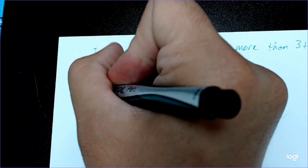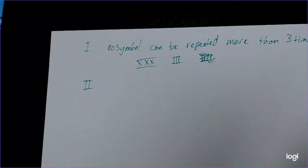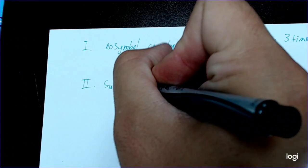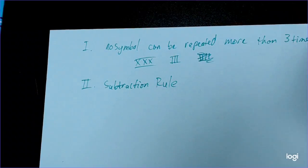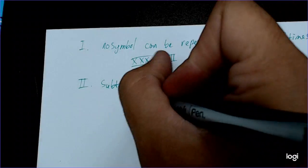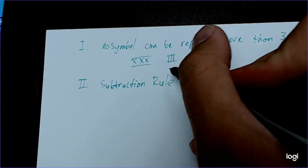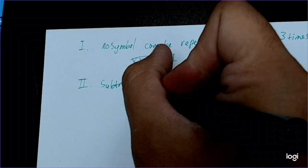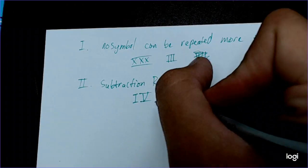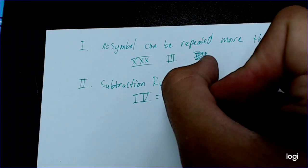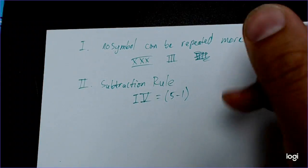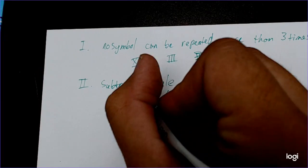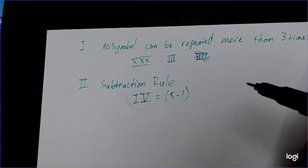That brings me to the second rule, which is the subtraction rule. If I wanted to write 4, what I would do is go to the next bigger symbol from 1, the next bigger symbol being 5. Instead of writing four I's, I would write IV, meaning 5 minus 1. This equals 5 minus 1. This symbol is one number. I know it's two symbols, but it's one number, one idea. That's why I did this in parentheses.